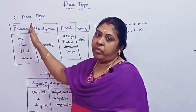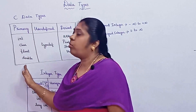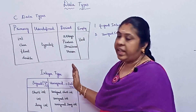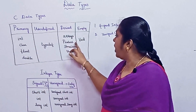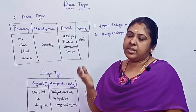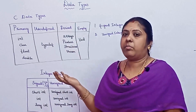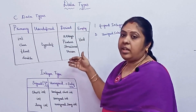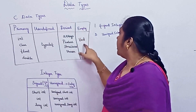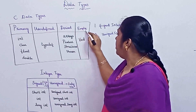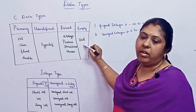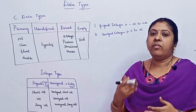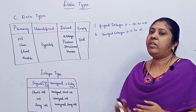In today's video we are going to highlight only the primary data types. The derived data types consist of arrays, pointers, structures, and unions. Arrays can be single-dimensional or multi-dimensional — pointers and the rest are vast topics we will discuss later. The empty type is void, which is used in functions that do not return any value.